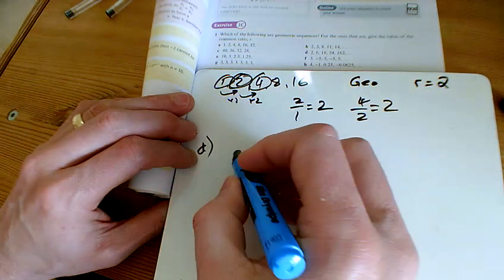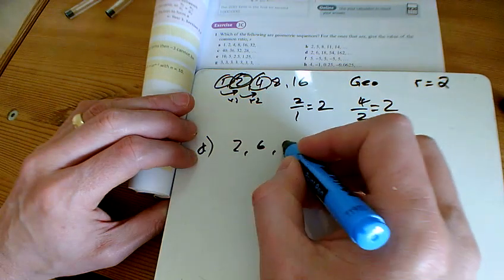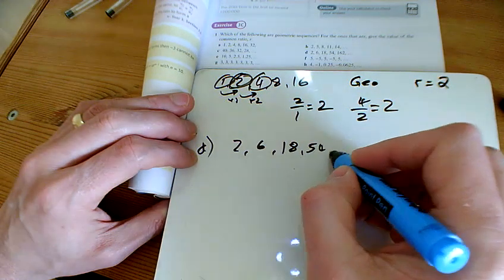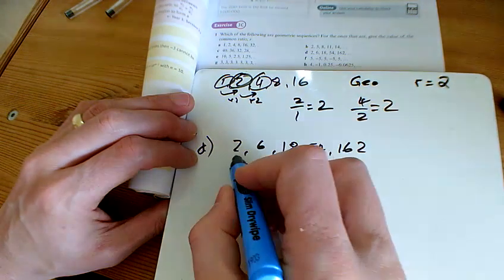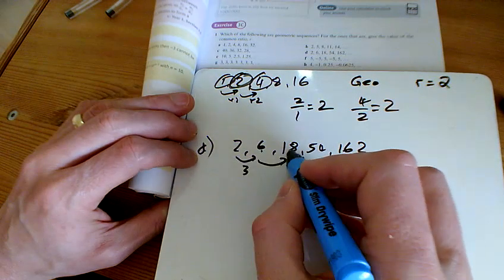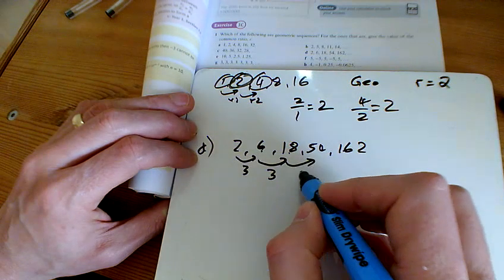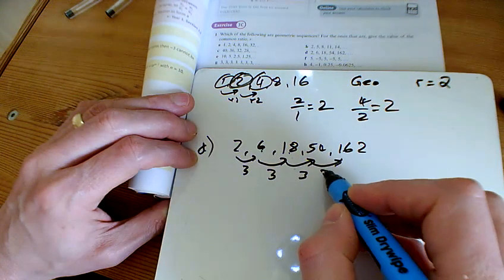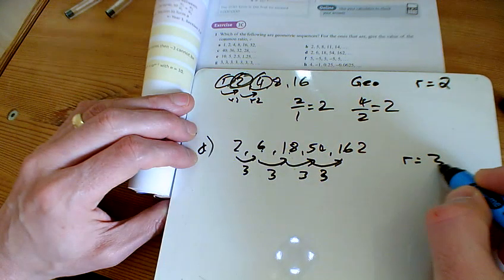D looks like it is though. It's going 2, 6, 18, 54, 162. And 6 divided by 2 is 3. So is 18 divided by 6. And so this one is a geometric one with R being 3.